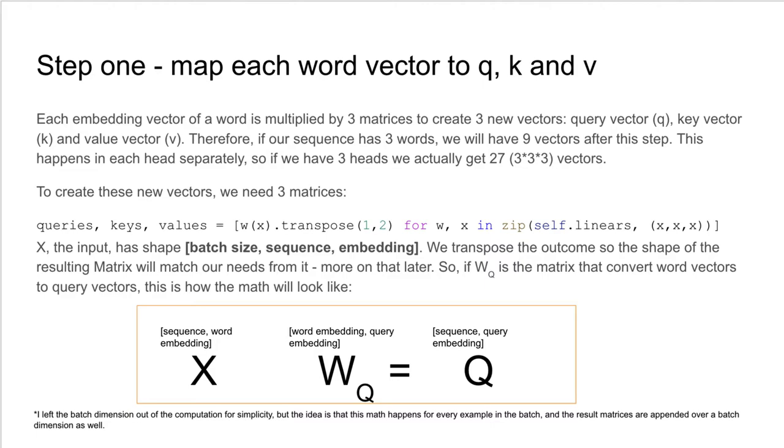Step one of the self-attention part of multi-head self-attention is mapping each word vector to Q, K, and V. More detailed is that each embedding vector of a word is multiplied by three matrices to create three new vectors: query vector Q, key vector K, and value vector V. Therefore, if our sequence has three words, we will have nine vectors after this step in each head. This happens in each head separately, so if we have three heads, we actually get 27 vectors. To create these new vectors, we need three matrices.